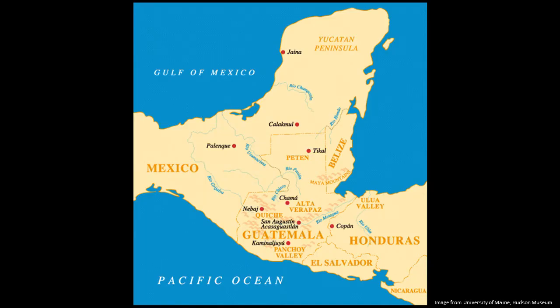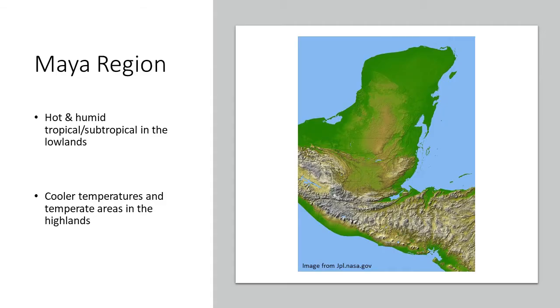When we're talking about the Maya region, we're talking about this region we often call part of Mesoamerica, made up of the modern-day countries of Mexico, Belize, Guatemala, Honduras, and El Salvador. Much of the Maya region consists of more low-lying areas with a hot, humid, tropical, and subtropical climate, with cooler, more temperate areas in the highland areas with higher elevation. This is very important because of the importance of interregional trade between areas with different goods.